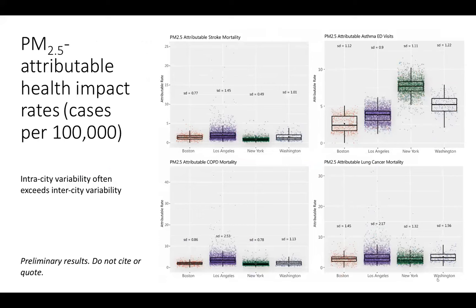We examined the difference between intra-city and inter-city variability for each health outcome. Scatter plots show tract-level attributable rates of disease for stroke, asthma emergency department visits, COPD, and lung cancer. The key finding is that intra-city variability often exceeds inter-city variability — there's quite a bit of heterogeneity happening within cities, in fact more so than between city averages.